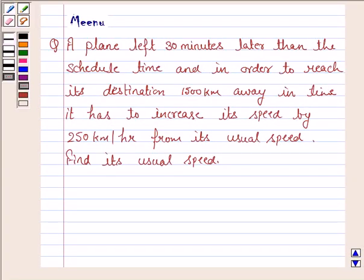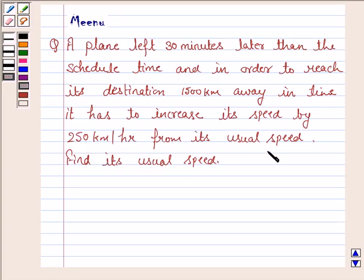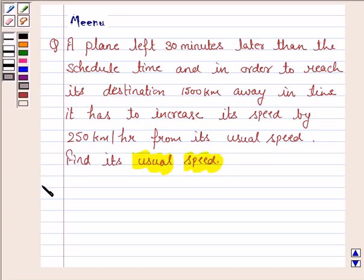Hello and welcome to the session. Let us discuss the following question. A plane left 30 minutes later than the scheduled time and in order to reach its destination 1500 km away in time, it has to increase its speed by 250 km per hour from its usual speed. Find its usual speed. So let us now proceed on with the solution.